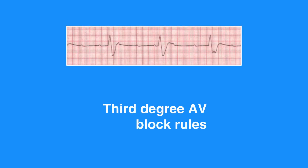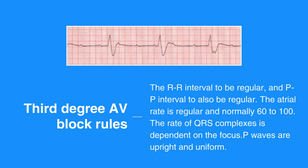Third degree AV block, or complete heart block, rules include RR interval to be regular and PP interval to also be regular. The atrial rate is regular and normally 60 to 100. The rate of QRS complexes is dependent on the focus — if the focus is ventricular, the rate will be 20 to 40; if the focus is junctional, the rate will be 40 to 60. P waves are upright and uniform. There is not a QRS following every P wave. The PR interval can only be measured on conducted beats and is usually constant. It may or may not be longer than a normal PR interval of 0.12 seconds. The QRS complex interval may be normal but is more likely to be prolonged.